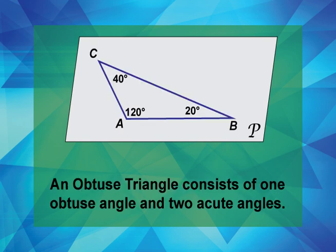An obtuse triangle consists of one obtuse angle and two acute angles. This is an example of an obtuse triangle. See the obtuse angle — the one greater than 90 degrees? See the two acute angles?